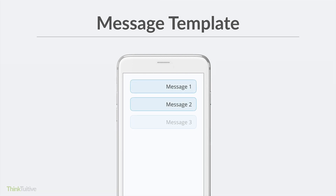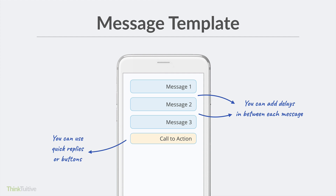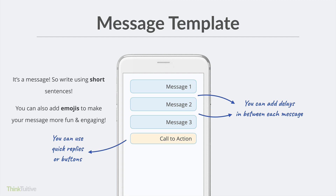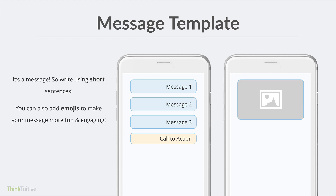A question I often get is writing tips when it comes to bot messages. I won't be able to cover copywriting tips in full detail in this tutorial, but here are two of my favorite message templates to help you get started. First, you could start with sending three short messages — to make it easier to read, you can also add in some delays in between each message. Then follow up with a call to action using quick replies or buttons. Just keep in mind you're sending a message, so write using short sentences. You can also add emojis to make your message more fun and engaging. My second recommended template starts with an image, followed by some text, then a call to action. If you're wondering why I start with an image, it's because images tend to be more captivating — if you start with text, it might not even get seen.